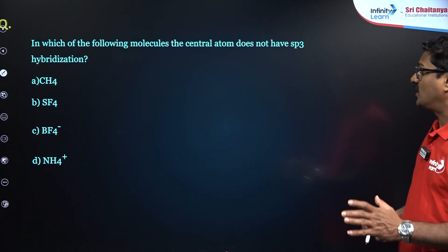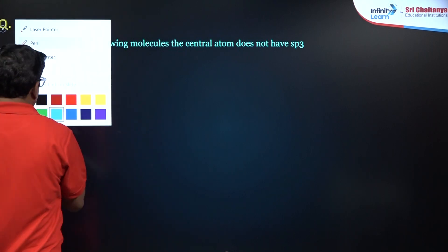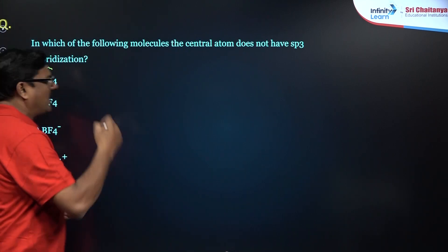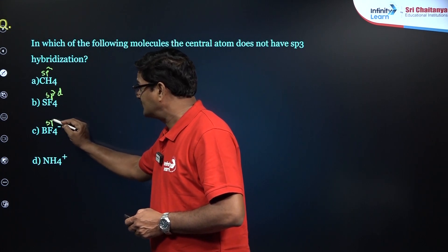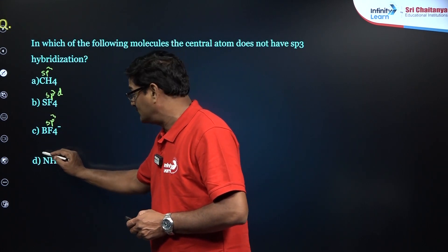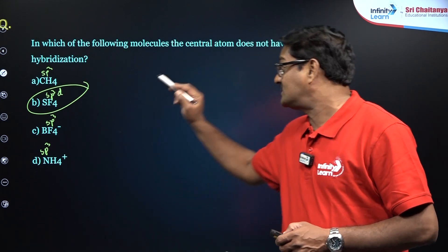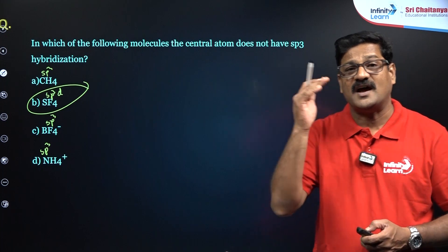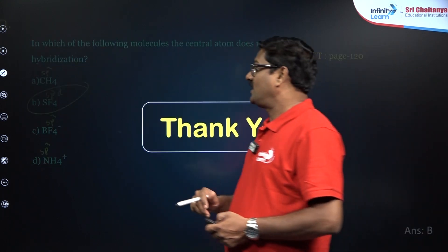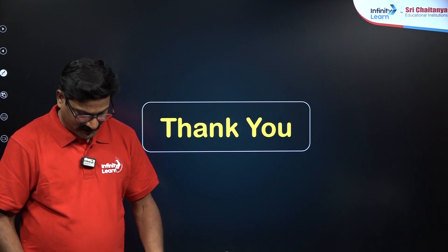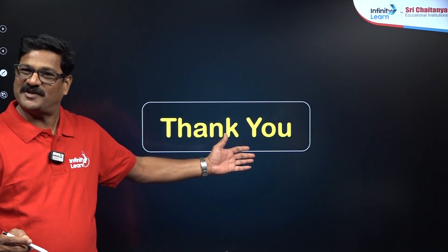In which of the following molecules does the central atom not have SP3 hybridization? CH4 is perfectly SP3, BF4⁻ is SP3, NH4⁺ is also SP3, but SF4 — using the hybridization formula — is SP3D, not SP3. So SF4 is the answer, option B. Today we discussed various formulas related to hybridization and NEET examination questions from NCERT.